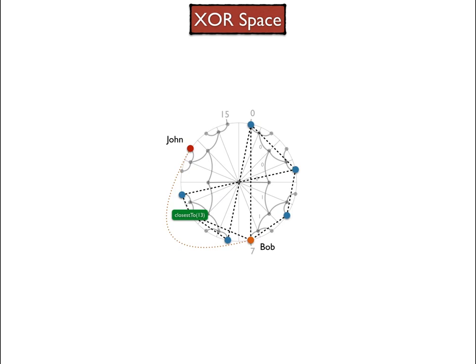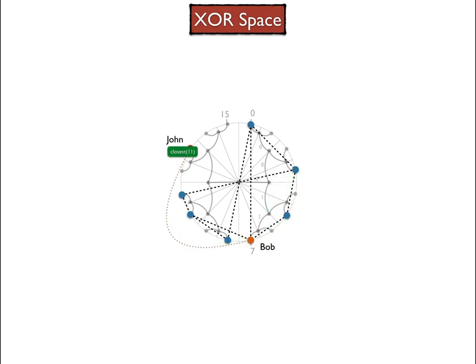That neighbor in turn will look at who of its own neighbors is closest to John's address. In turn, that neighbor will realize that it is the closest one, so it will reply with its own information to Bob, which then relays the message to John.